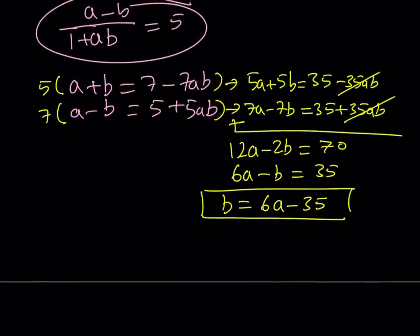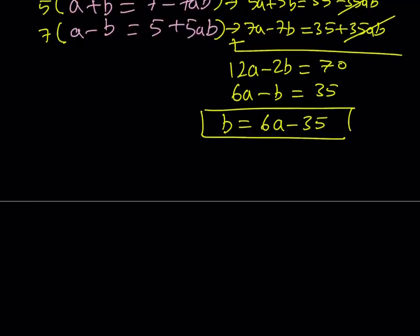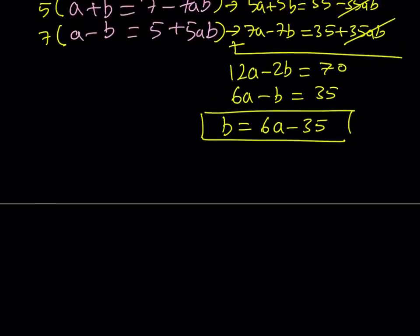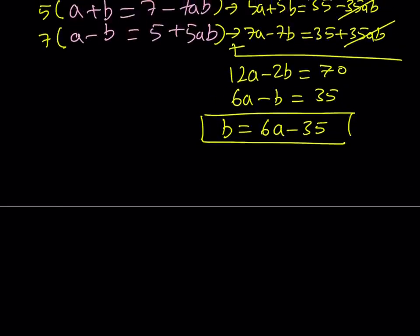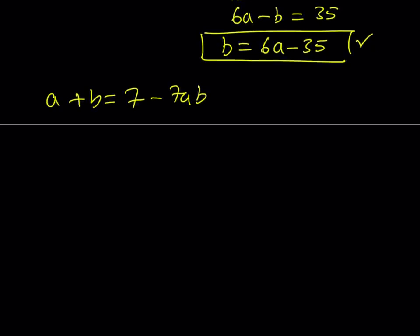Now I want to go ahead and substitute this into the first equation. So we have a plus b equals 7 minus 7ab. Let's rewrite it so we know what the original one is. Now replace b with 6a minus 35 on the left-hand side as well as the right-hand side. This is going to give you an equation in a, and it is going to be quadratic.